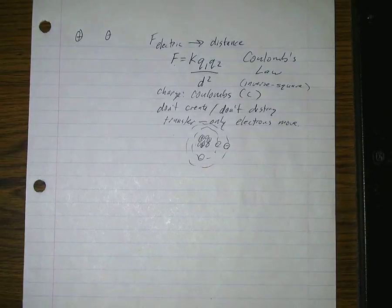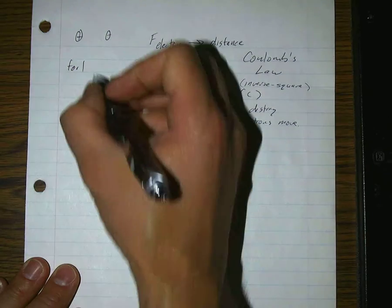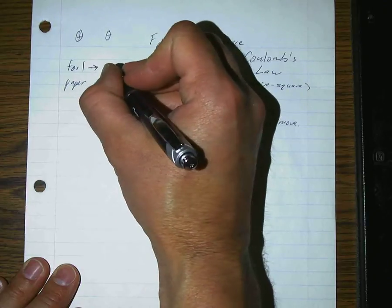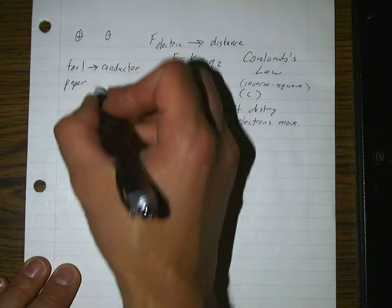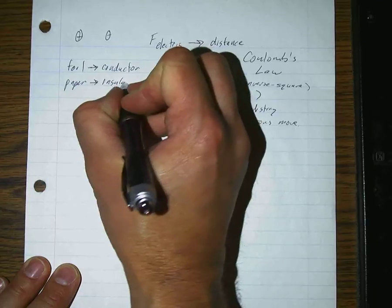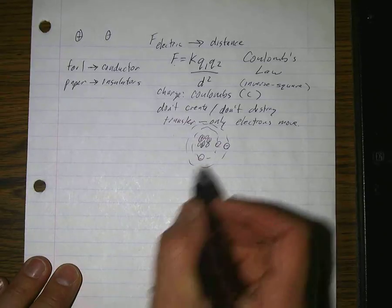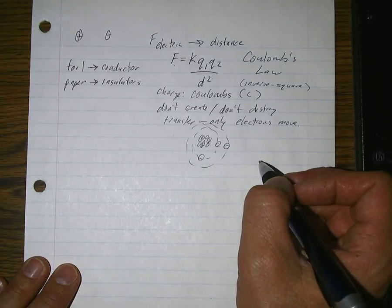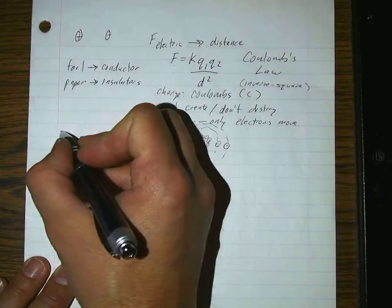Electrons can move some, depending on what kind of material it is. We learned right away that if it was foil, it acted differently than the paper did, because foil was a conductor which holds its electrons loosely so they're able to move easily, whereas paper is an insulator which holds the electrons tightly and they're not able to move so easily. So whenever things become charged, it's because either electrons jumped onto it, which would make it negative, or electrons jumped off of it, which would make it positive.